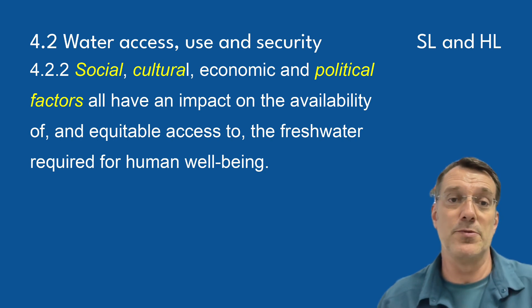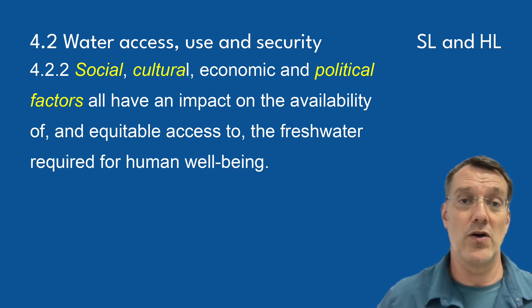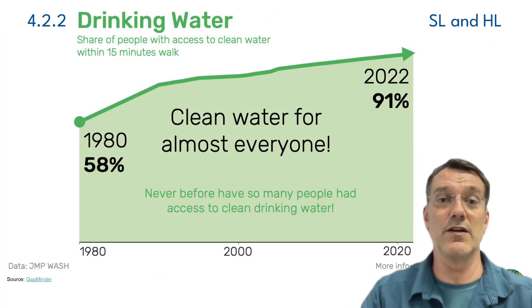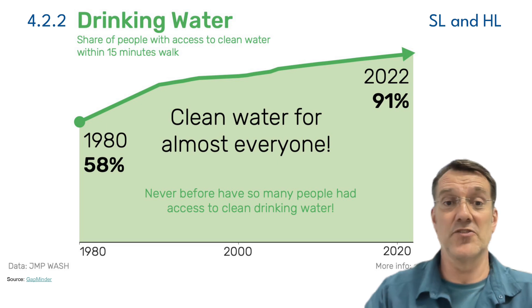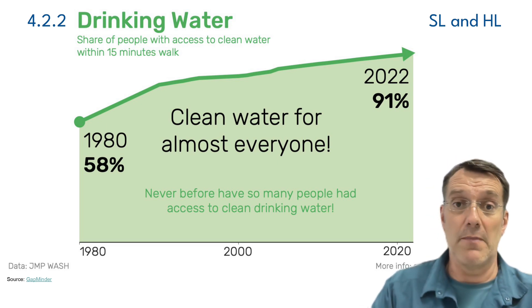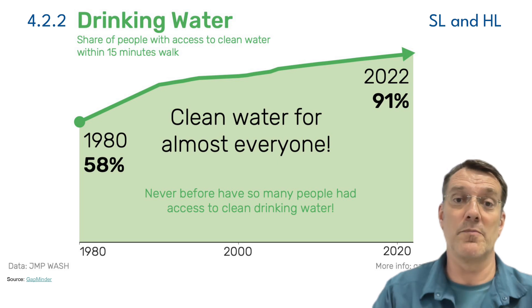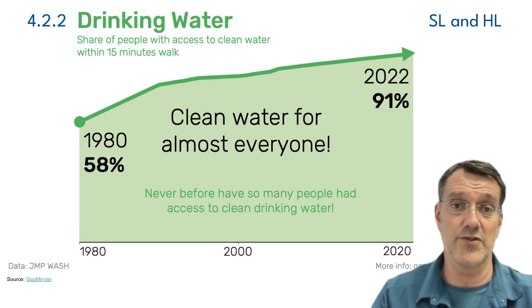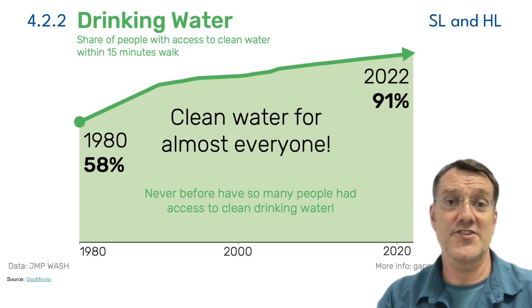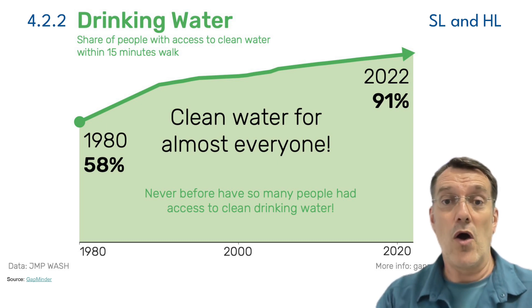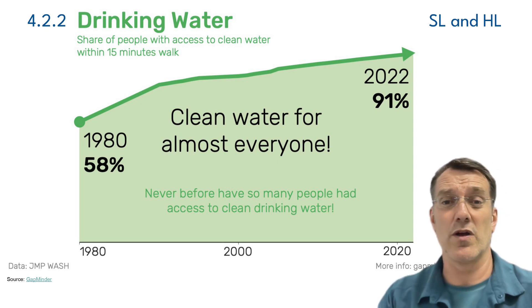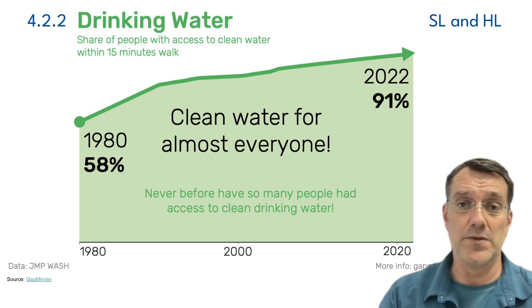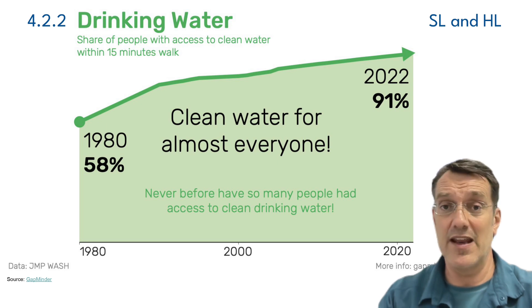Each year, hundreds of thousands of people die from diseases linked to contaminated water — all of this is preventable with proper water security measures. This Gapminder graph shows encouraging progress in global water access. In 1980, only 58% of people worldwide had access to clean drinking water within a 15-minute walk. But by 2022, that figure had reached 91% — remarkable progress in just 40 years. However, this global average masks important regional disparities. Almost 800 million people still lack basic water services, and billions more use water that isn't safely managed. The progress is real, but universal water security is still an unfinished goal.